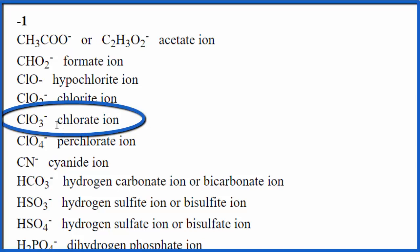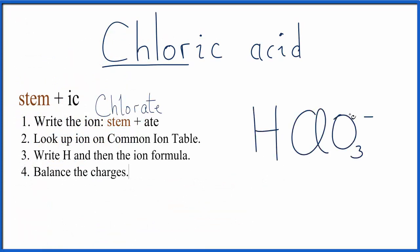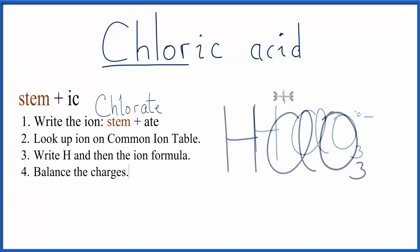We remember ClO₃⁻ and go back to our rules. We write ClO₃⁻ and then put H in front of it. The last step is to balance the charges: ClO₃ has a minus charge, hydrogen is always positive 1, and the plus and minus cancel out to give a net charge of 0. That makes the formula for chloric acid HClO₃.